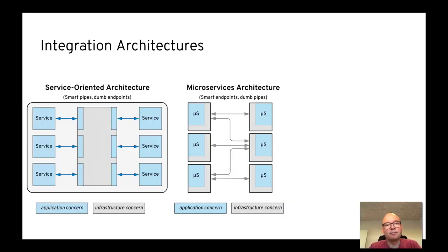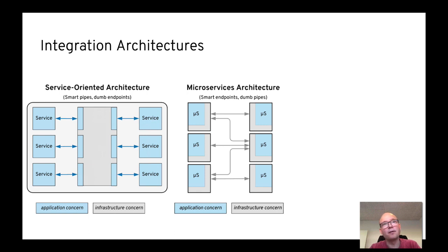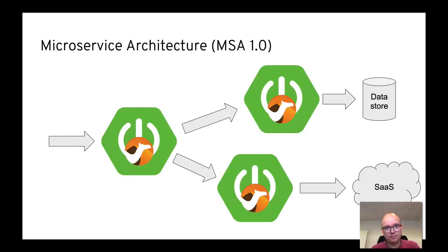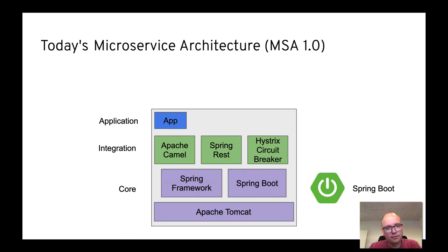In recent times, microservice architecture has evolved — more designed for change, with individual teams, bounded contexts and all that. Microservice 1.0 based on 12-factor and Netflix stack and so on. In Camel, we saw people picking up that trend and primarily using Spring Boot to build different microservices with Camel. We call this microservice 1.0, and you can do that today — it's been built on Camel.